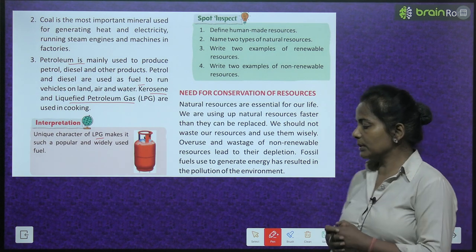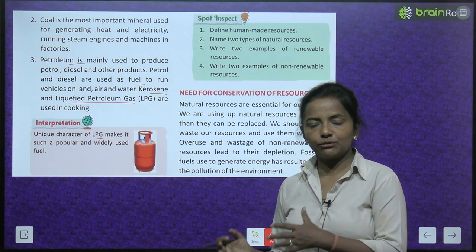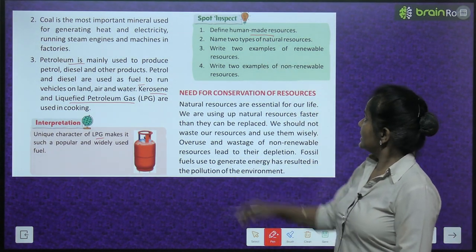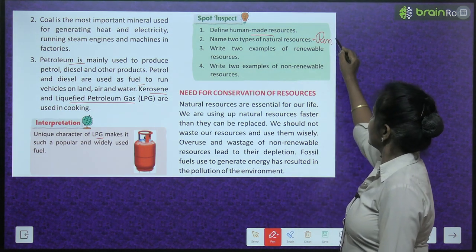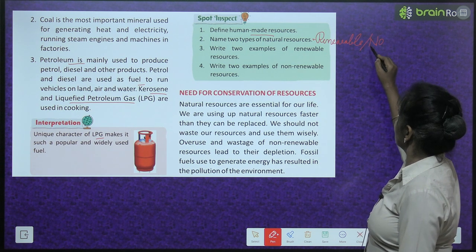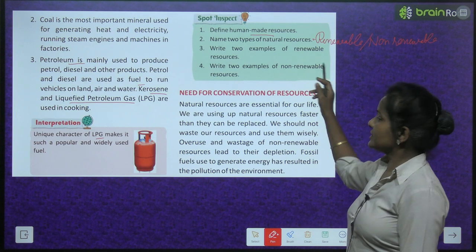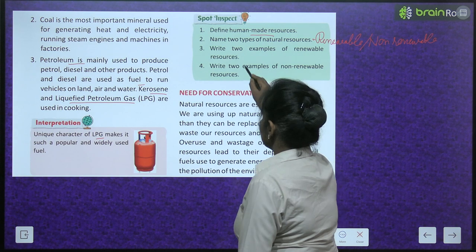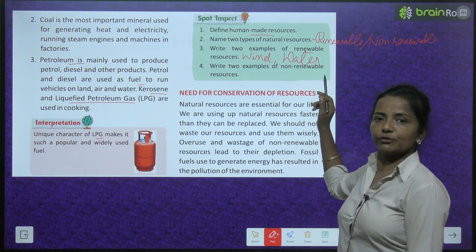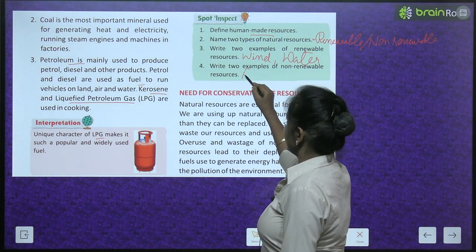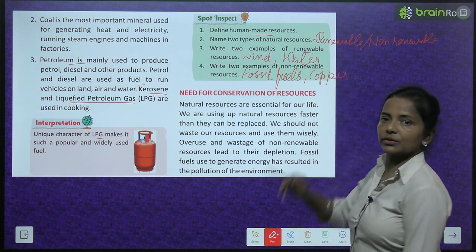Spot Inspect: Define human-made resources — things made by humans using natural resources are called human-made resources. Name two types of natural resources — renewable and non-renewable resources. Write two examples of renewable resources — wind and water. Write two examples of non-renewable resources — fossil fuels and copper.